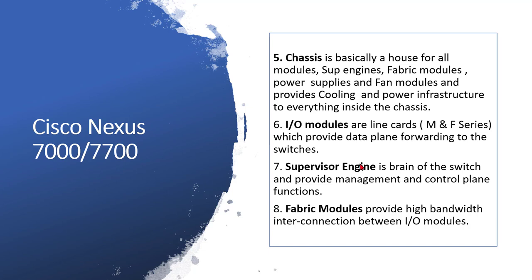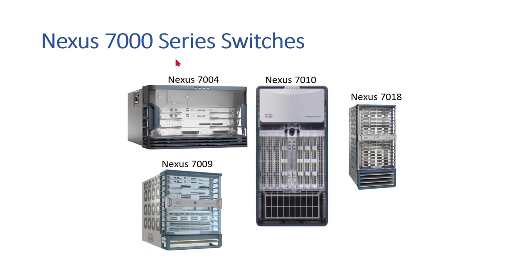The fabric module provides backplane interconnection because traffic from one module reaches a second module only through that connection. One fabric module will connect to all modules. If modules are placed horizontally in a chassis, the fabric module will be vertical. The 7000 series has four chassis types: 7004, 7009, 7010, and 7018 — the number indicates the total module slots.